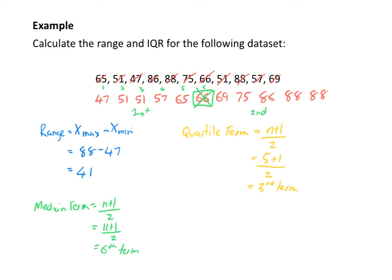Starting at the beginning of the first half and counting to the 3rd term, my third term is 51. So my quartile 1 value is equal to 51.